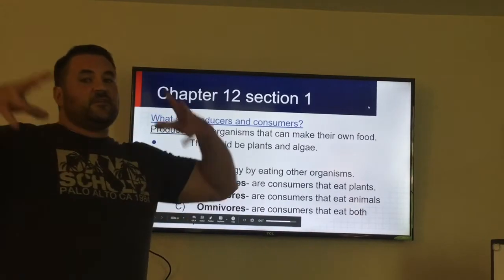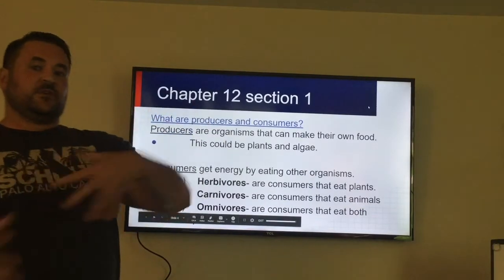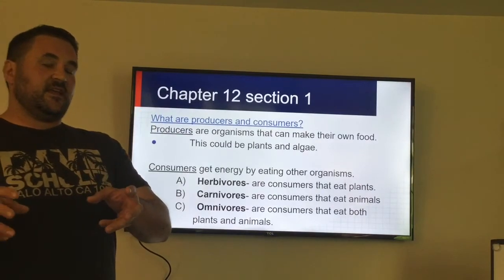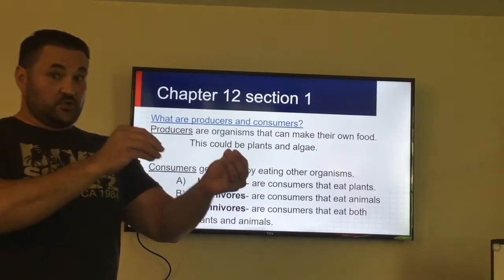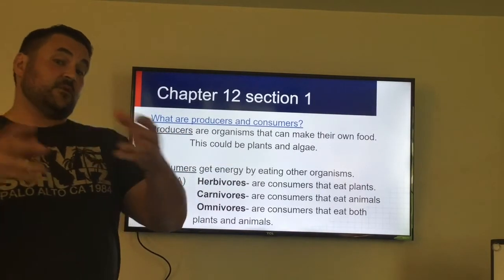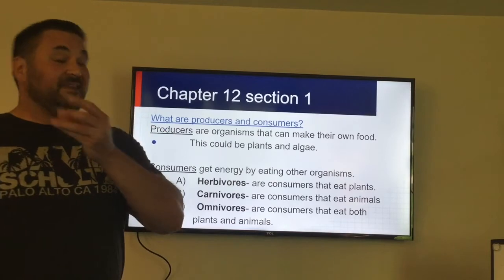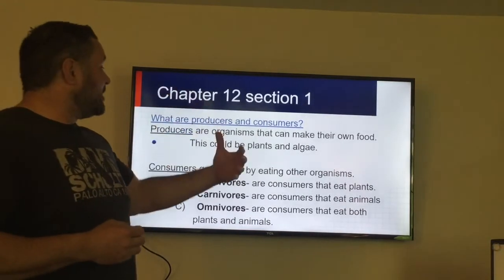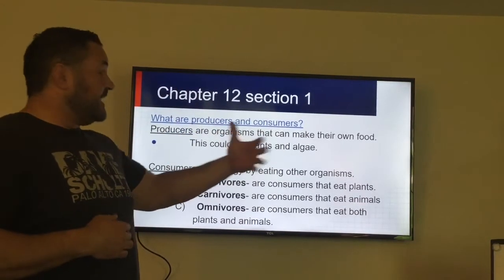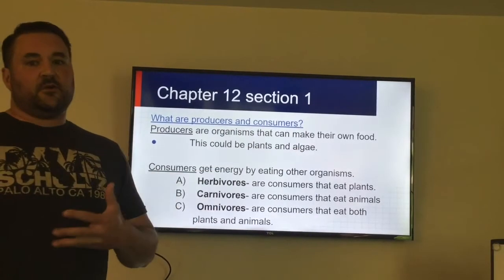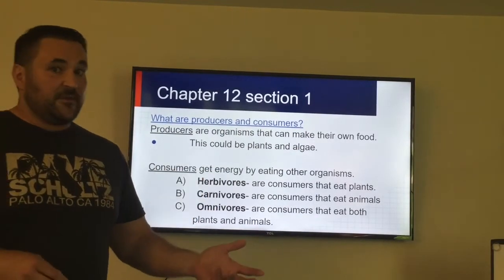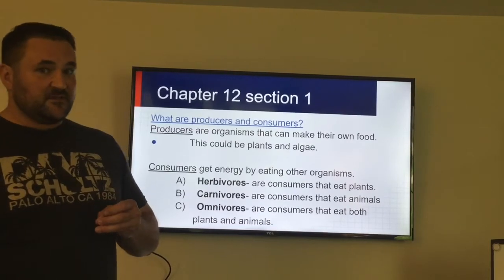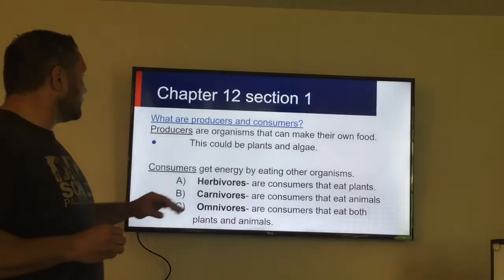We've got to start out with producers and consumers. A producer, often called an autotroph, means it can make its own food. Auto meaning self — like automobile is self-propelled. An autotroph makes its own food, usually by photosynthesis. If you're at the bottom of the ocean, it can be chemosynthesis — they use sulfur from the volcanoes.